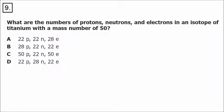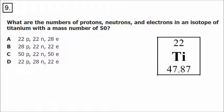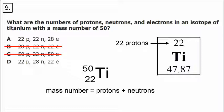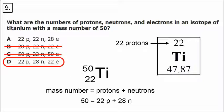Number 9: we're talking about protons, neutrons, and electrons. The isotope of titanium has a mass of 50. Finding titanium on the periodic table — its symbol is Ti and it has 22 protons. Since the mass number equals protons plus neutrons, 22 plus what equals 50? 50 minus 22 is 28. So we have 22 protons and 28 neutrons. The correct answer is D.